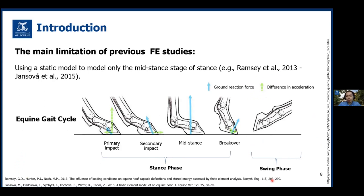The main limitation of all previous FE studies is that they modeled the hoof only at the mid-stance of the stance phase and under static loading conditions. Each movement cycle involves two phases: the stance phase in which the hoof is in contact with the ground, and the swing phase when the hoof is lifted. The stance phase includes four stages: primary impact when the hoof reaches the ground, secondary impact when ground reaction force increases, mid-stance when ground reaction force is maximum, and the break-over stage when the hoof starts to leave the ground. Previous studies only modeled at mid-stance, but the hoof is under dynamic loading during locomotion, which should be considered in FE simulations.